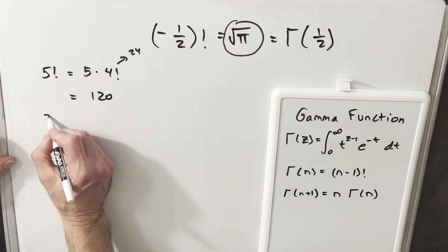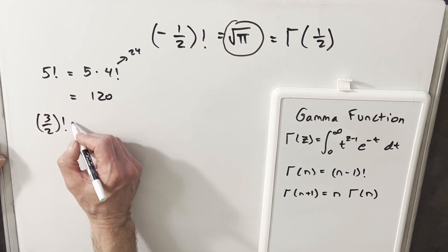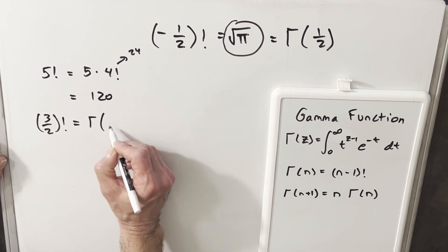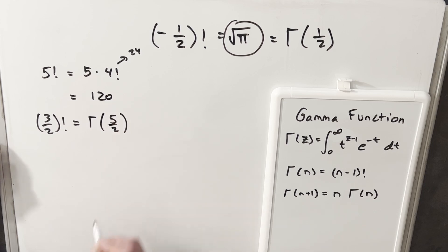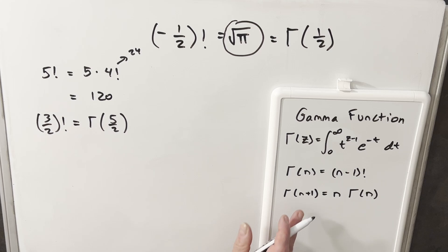But then if we're looking at, say, 3 half factorial, I think it becomes a little more useful because this is the same thing, just using the second formula, that's the same thing as gamma of 5 halves, right? Okay, 5 halves minus 1 gives 3 and a half factorial.